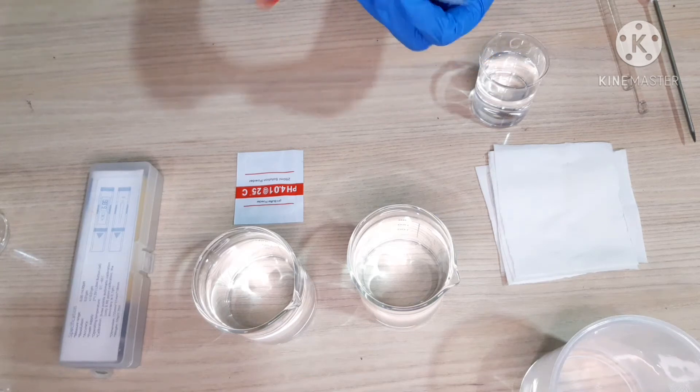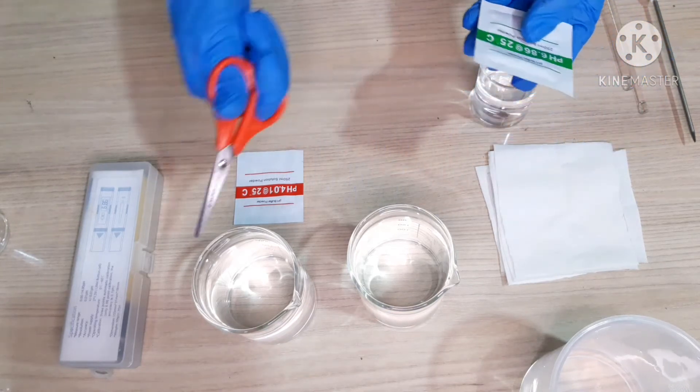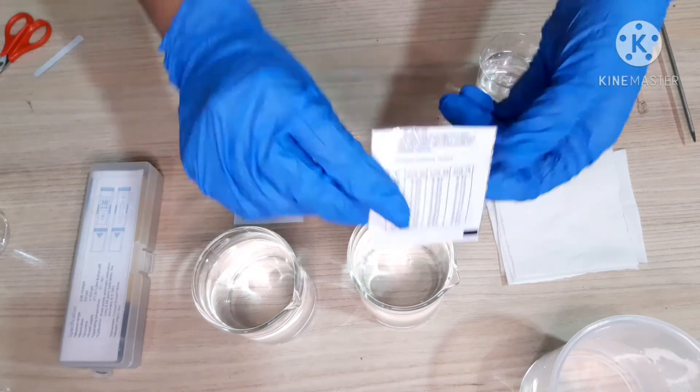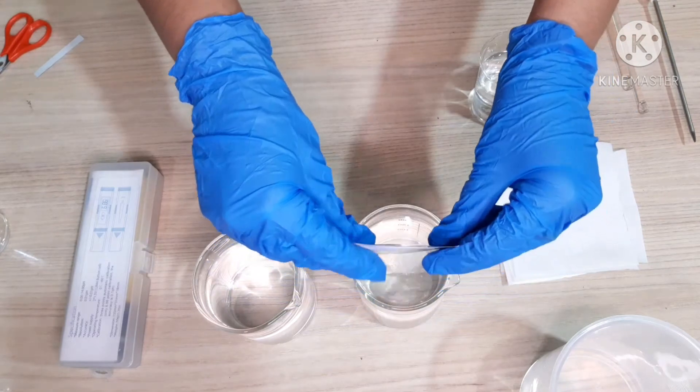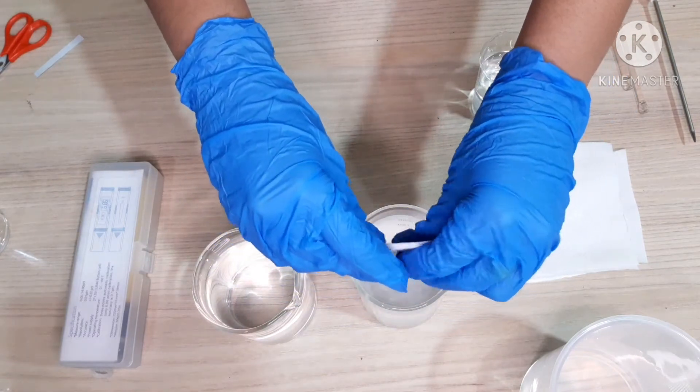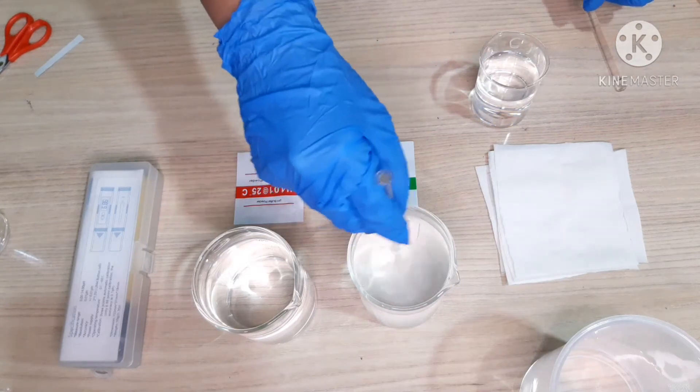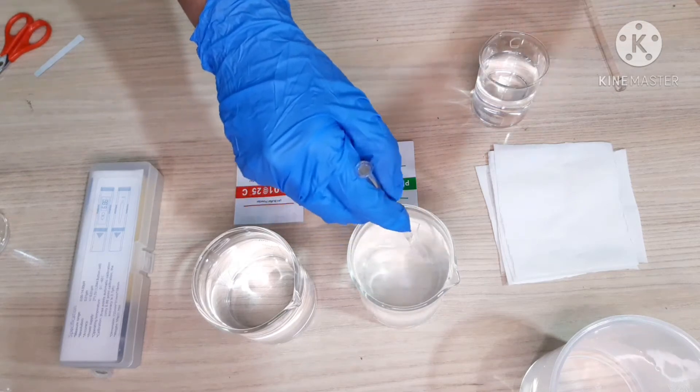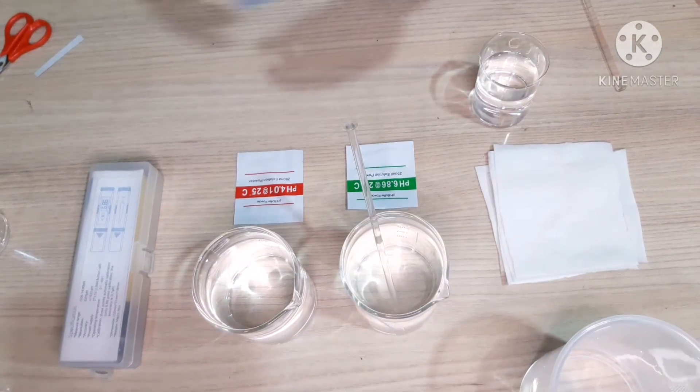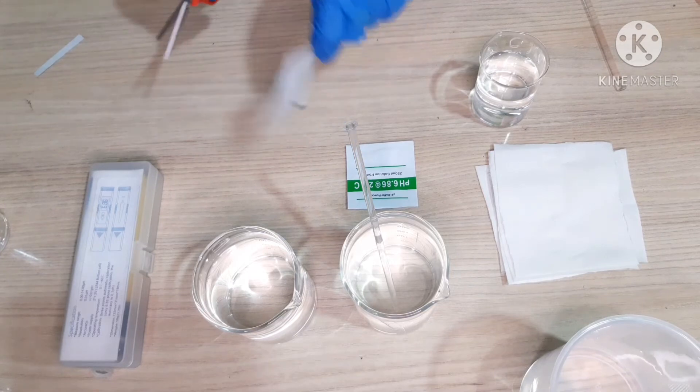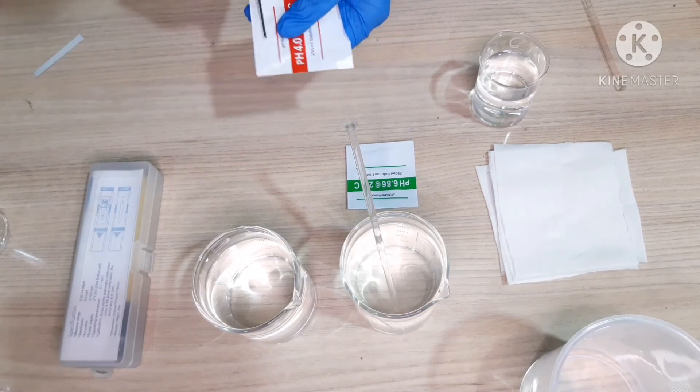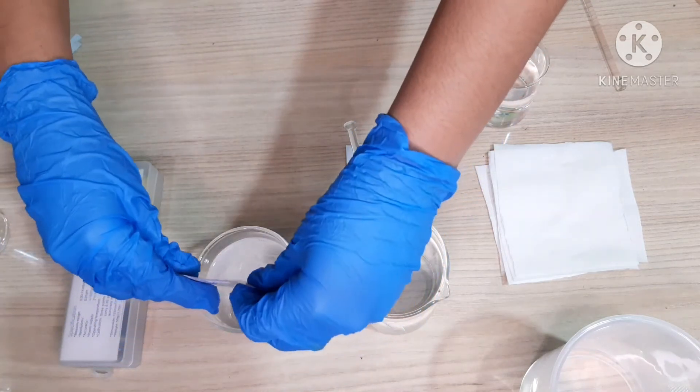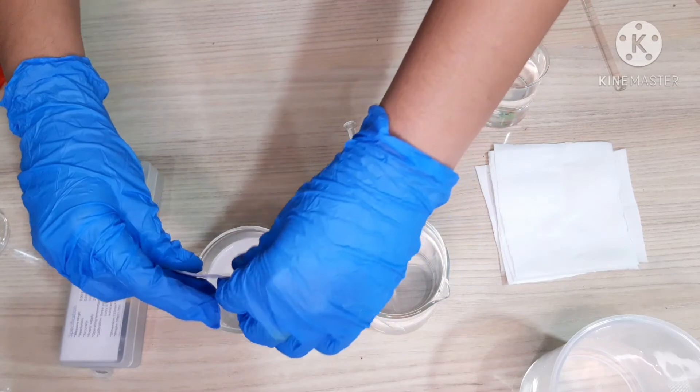First, let me cut and pour it in 250 ml of water each. Now, I will cut pH 4.01 and also pour it into this beaker. You can stir it slowly so that it mixes properly.